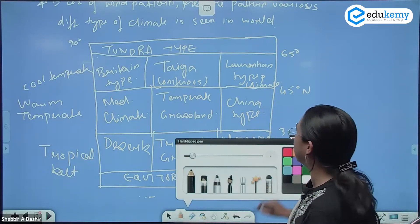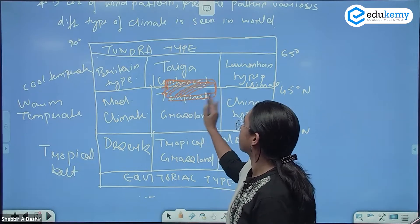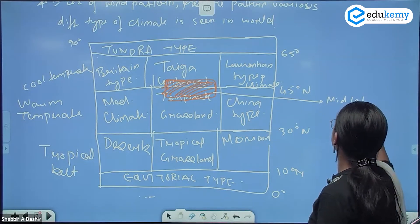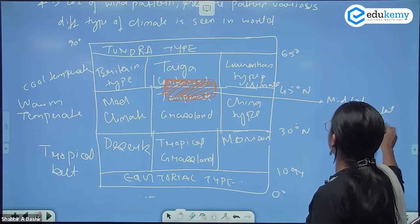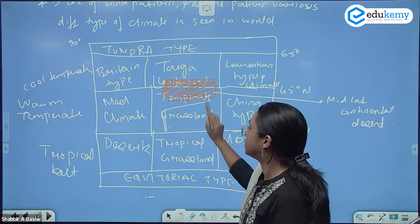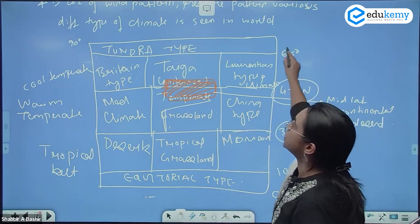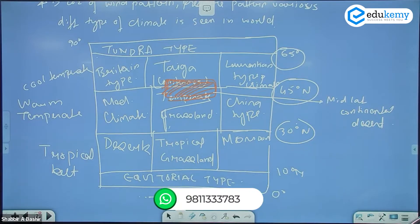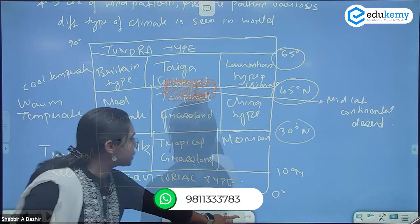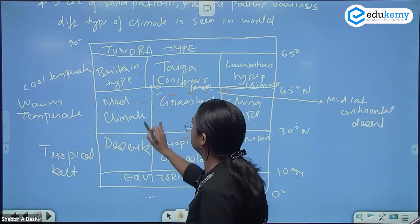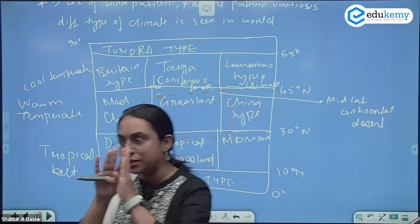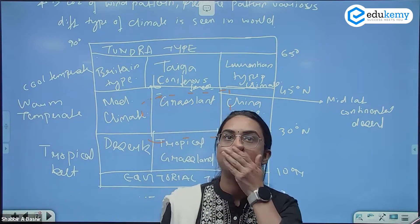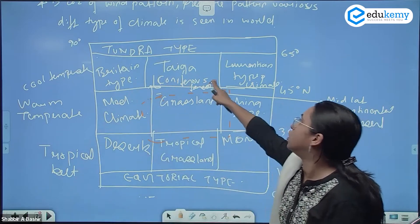When we say mid-latitude deserts, this is your mid-latitude continental desert. Since some deserts extend as high in latitude as 30 to 65 degrees, rather than giving a specific location I'm drawing a belt so the approximation gives you the right idea.